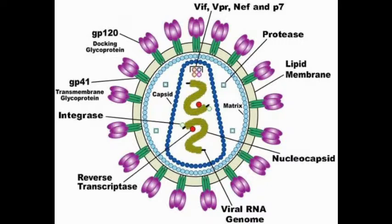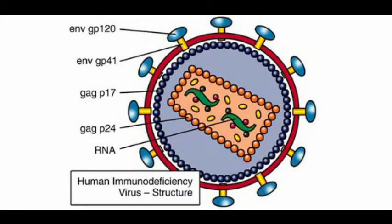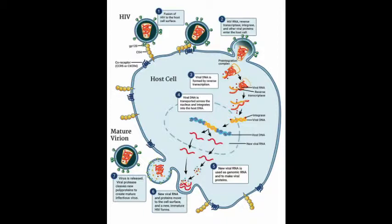AIDS is caused by HIV, which attaches itself to T helper cells and takes over their functioning, causing a decrease in immune power. The HIV structure has multiple envelope layers — gp120, gp41, gp17, and gp24 — which must be memorized. Inside the capsule are two single-stranded RNA molecules; HIV is the only animal-attacking virus with RNA and is considered an exception. Its replication cycle steps should also be remembered.